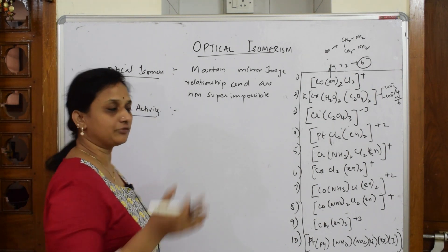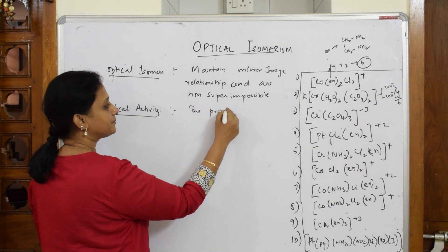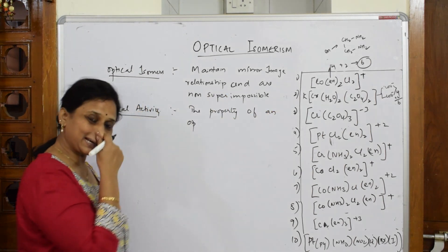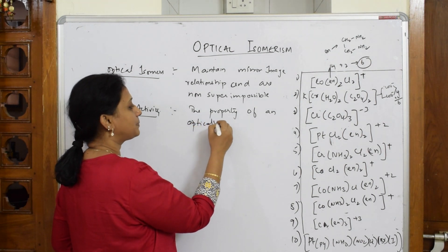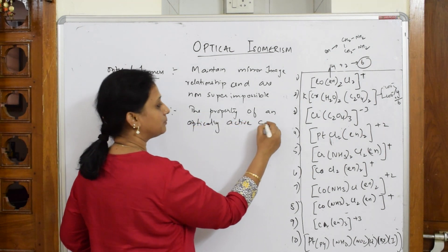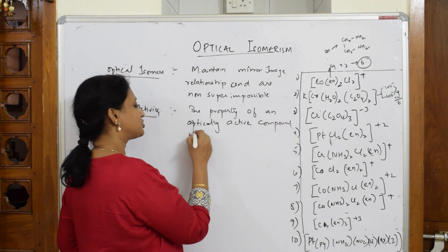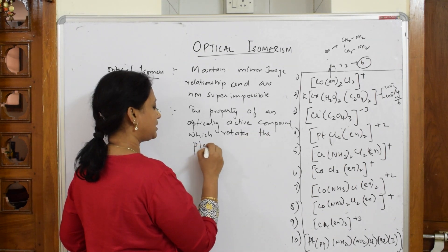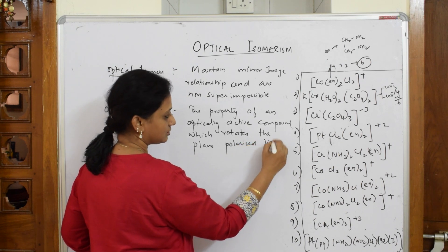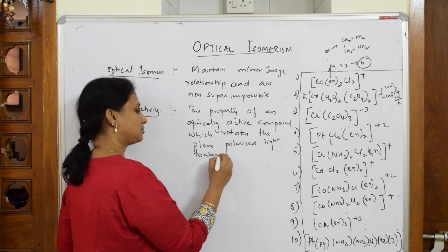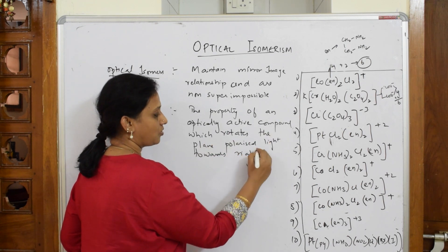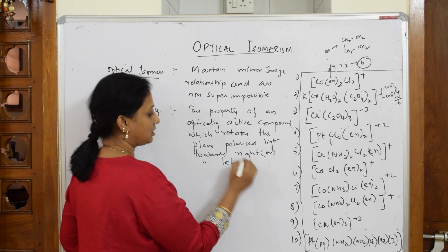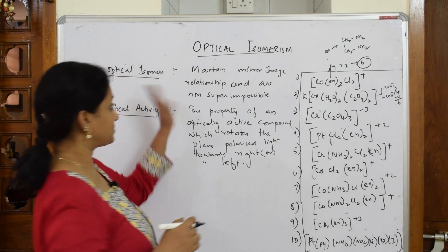So what is optical activity? If I have to define, optical activity is the property of an optically active compound which rotates the plane polarized light - plane polarized light towards right or clockwise - or towards left. That's optical activity.